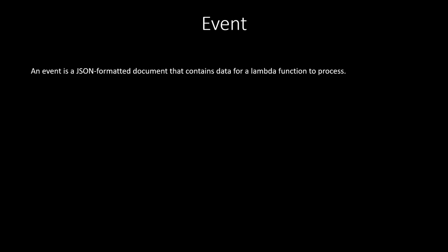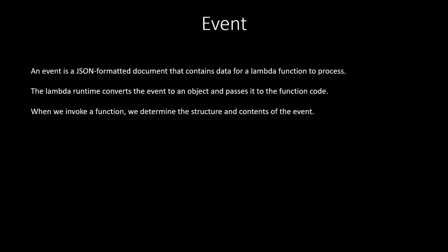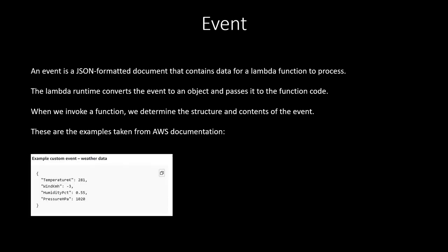Now, what is an event? An event is a JSON-formatted document that contains data for a Lambda function to process. The Lambda runtime converts the event to an object and passes it to the function code. When we invoke a function, we determine the structure and contents of the event. For example, this is a custom event of weather data where we are passing values like temperature, wind, kilometers per hour, humidity, and pressure — passed as a JSON document to the Lambda function.